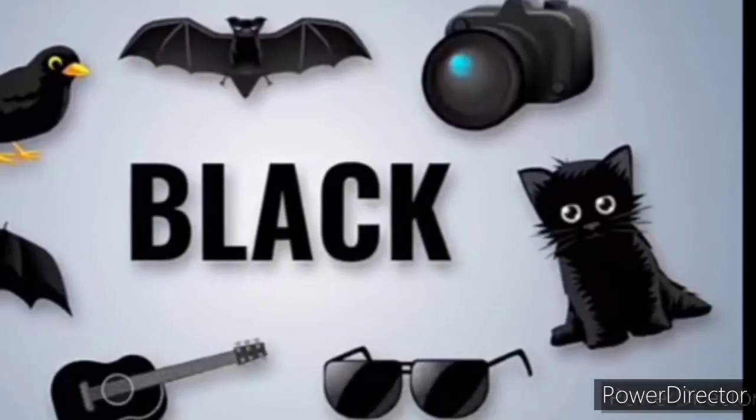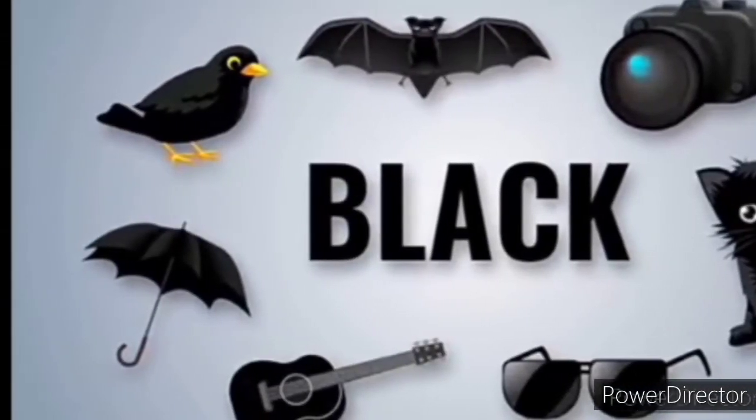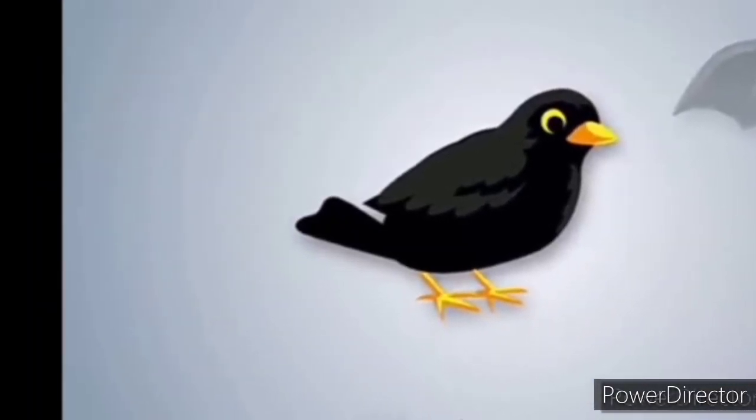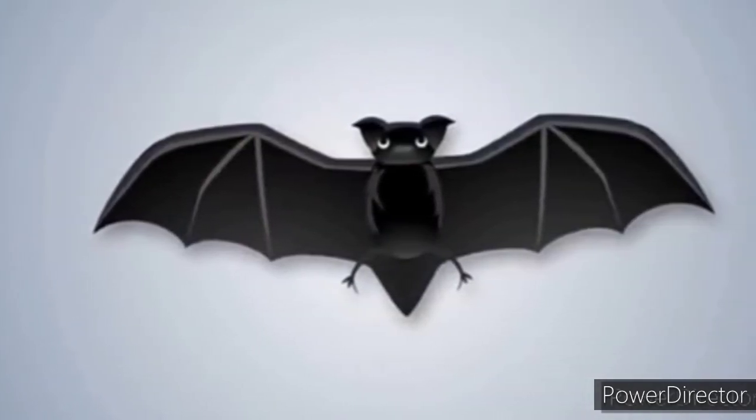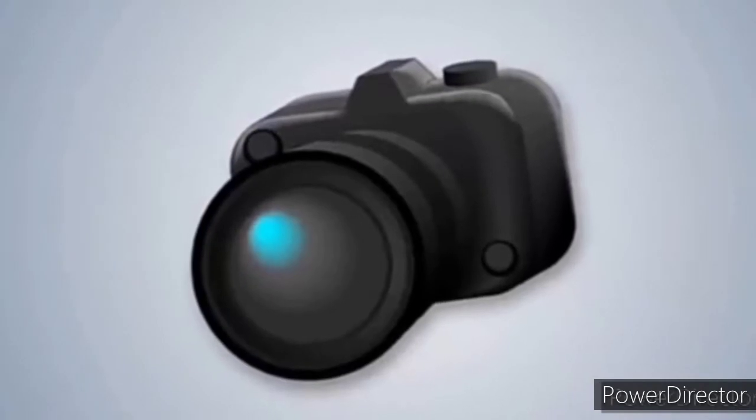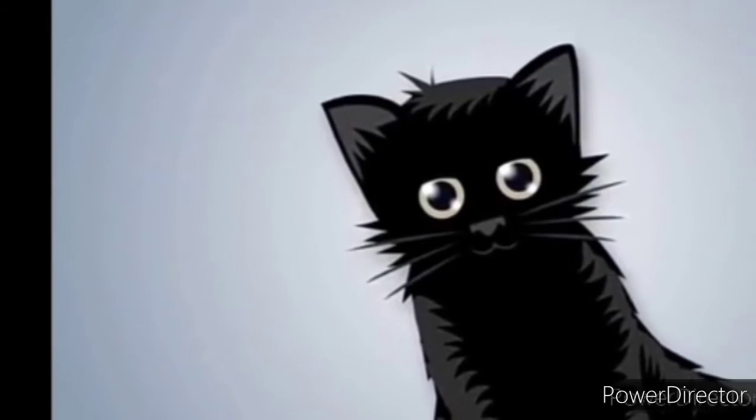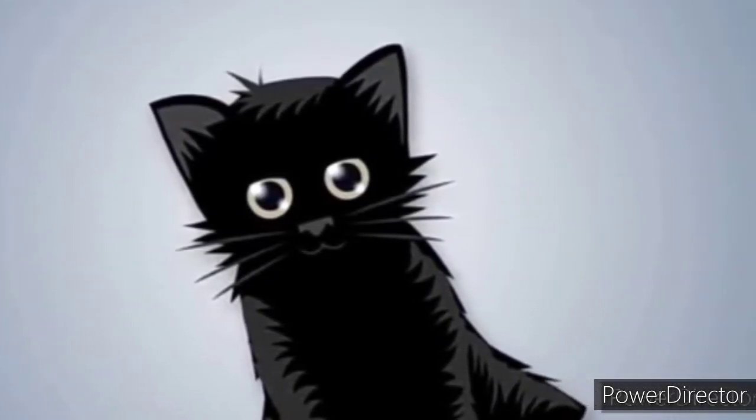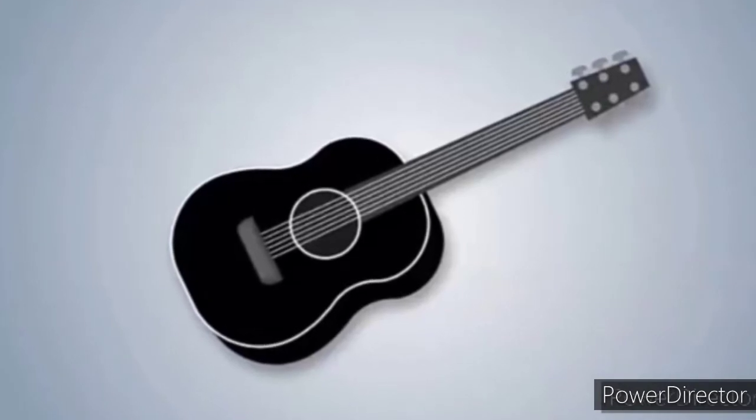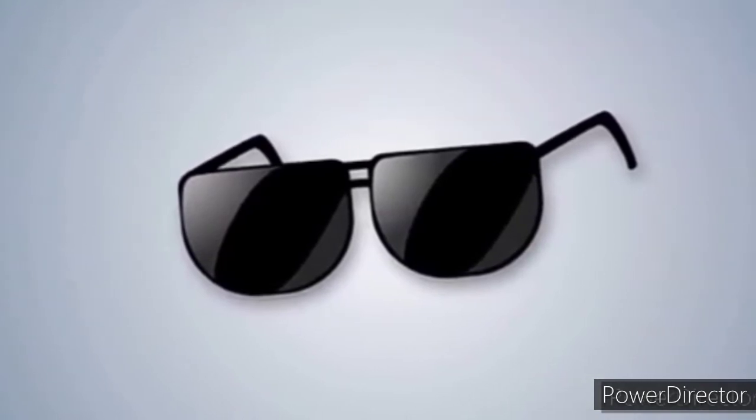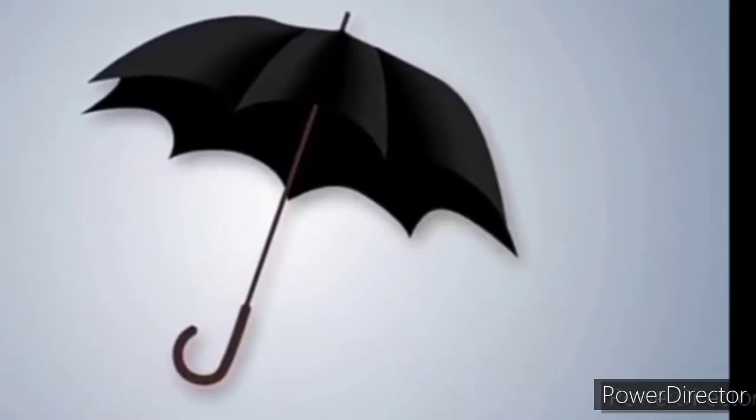Okay, now let's learn about some things through flashcards which are in black and white color. Let's see some black color objects. Black bird. Black bat. Black camera. Black cat. Black sunglasses. And black umbrella.